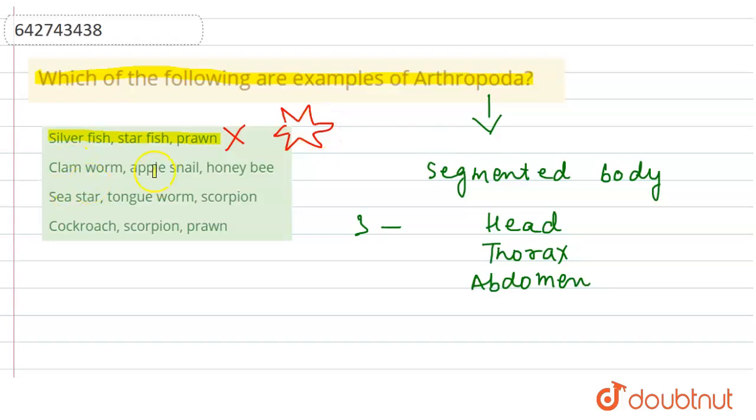Sea star, tongue worm, and scorpion - no, they are also not arthropods.